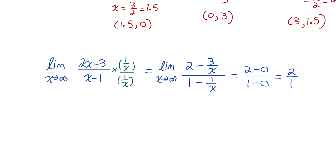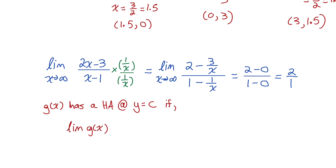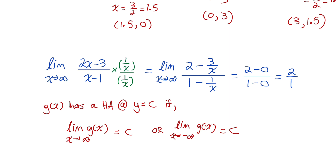This meets the definition of a horizontal asymptote: g(x) has a horizontal asymptote at y equals c if the limit of g(x) as x approaches infinity equals c, or if the limit as x approaches negative infinity equals c. If either of those are true, there must be a horizontal asymptote at y equals c. Hopefully you enjoyed that lesson — make sure you go to jensenmath.ca, download the sheet of practice questions, and practice graphing these quotients of linear functions.